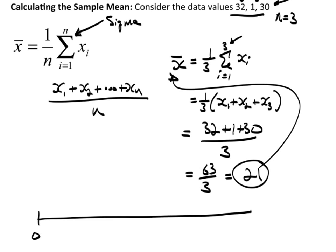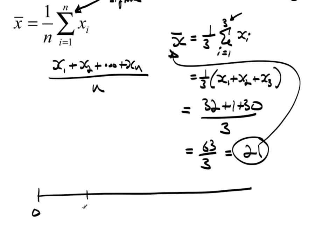Let's see, we went to 32, so let's do say 10, 20, 30, 40—that is absolutely more than enough. Okay, so we had a data value over here at 1, we had a data value at 30, and another data value at 32.